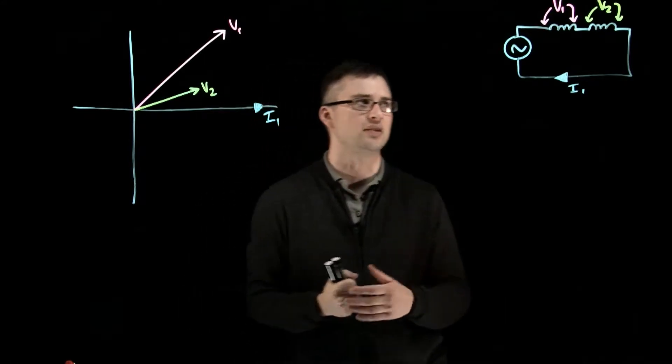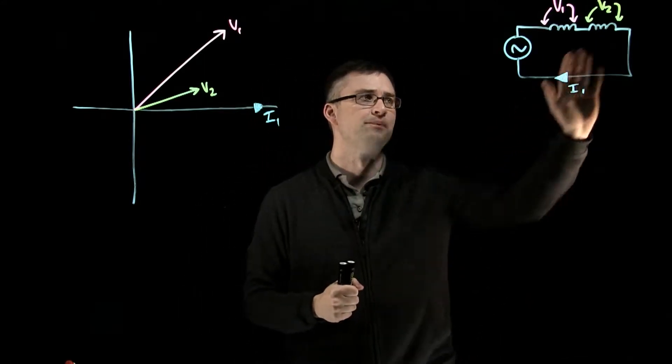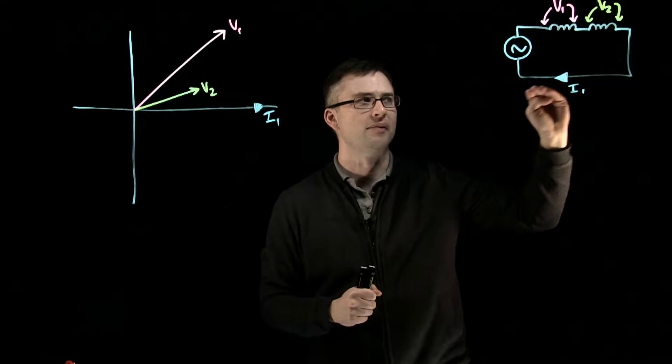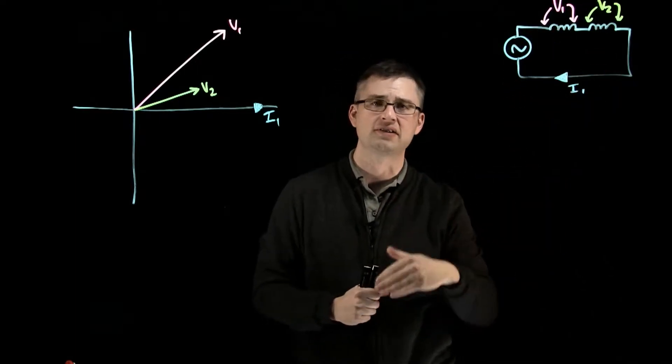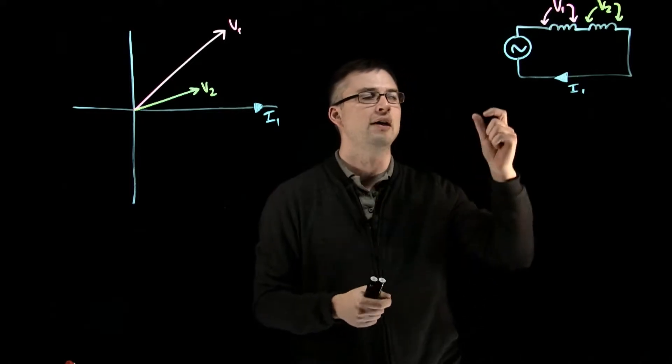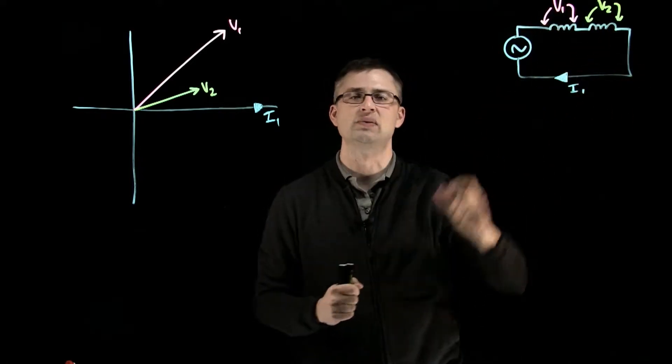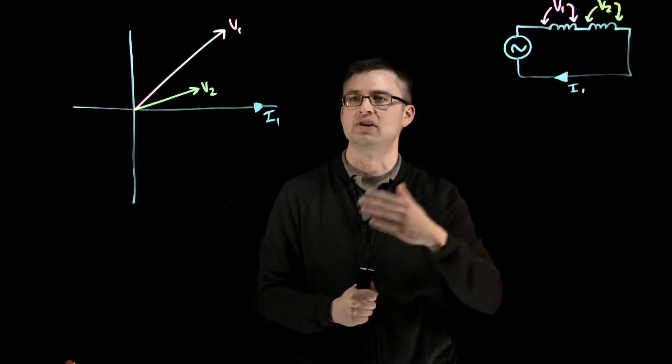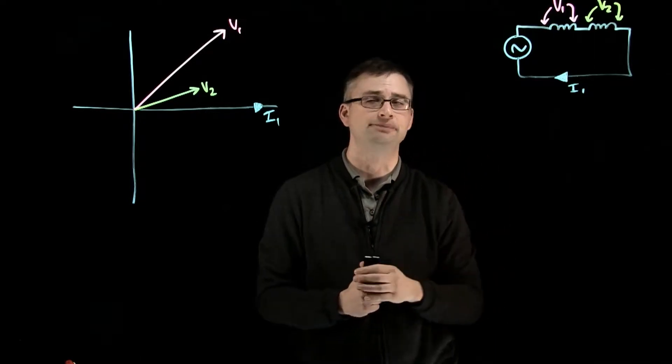Where we would see this is in a series circuit. That's what I have drawn up here. We've got an AC source. I've got my current, and we know that current is constant in a series circuit. So we might as well use that as a reference because it's not going to change. What changes is the volt drops across each component. That's where we start to see differences in time.